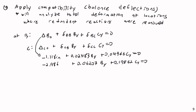We now have two linear equations with two unknowns, B_Y and C_Y. Solving this system using a matrix method, I get B_Y = 39.875 kips and C_Y = 2.570 kips. We now have our redundant reactions and essentially have a statically determinate beam.